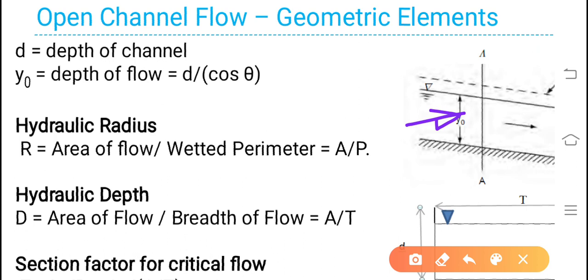Area you can calculate as Y into B. Perimeter is 2 times Y plus B. Hydraulic depth is defined as the ratio of area of flow to the top width of flow — A by T, where T is the top width of flow or top width of channel.